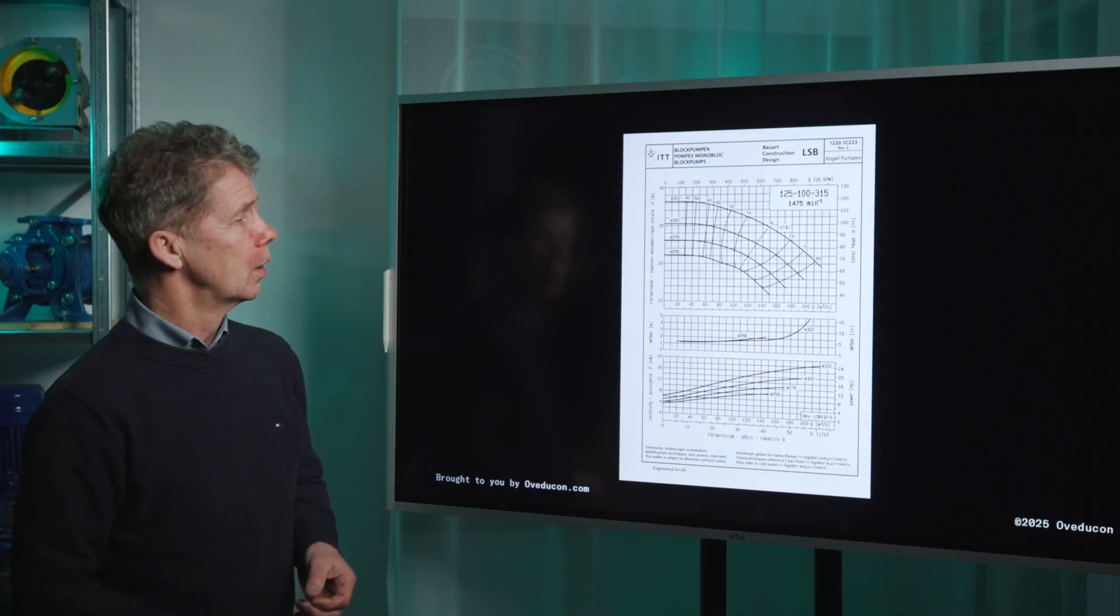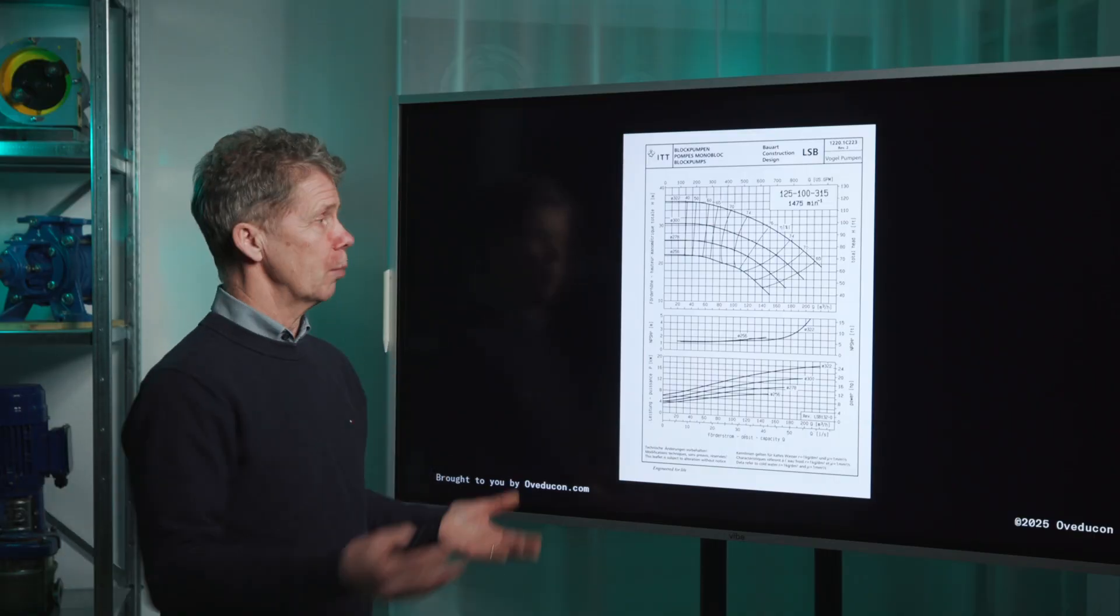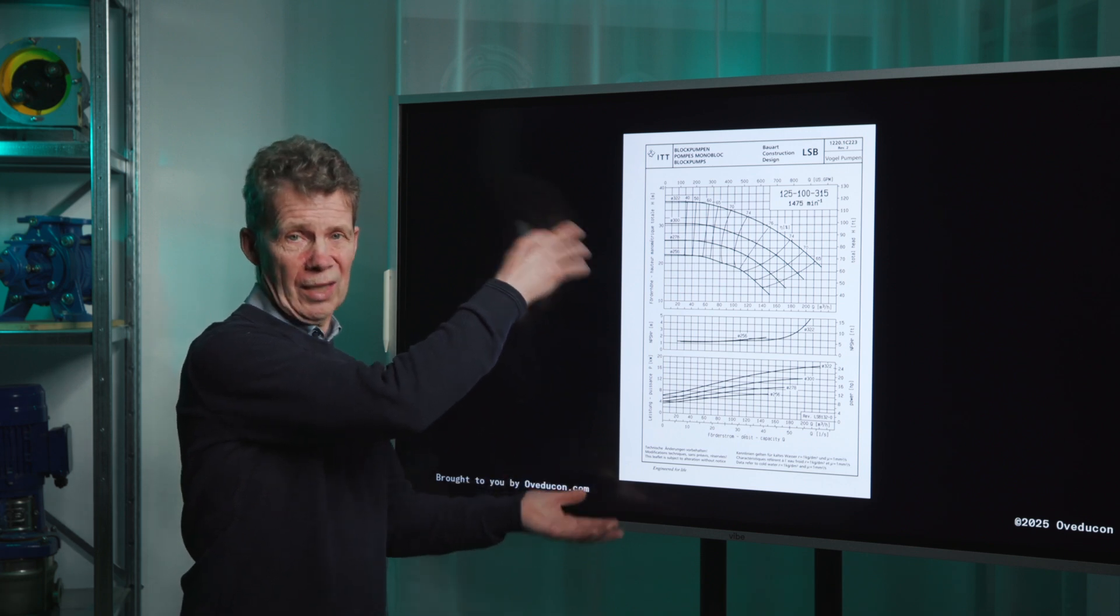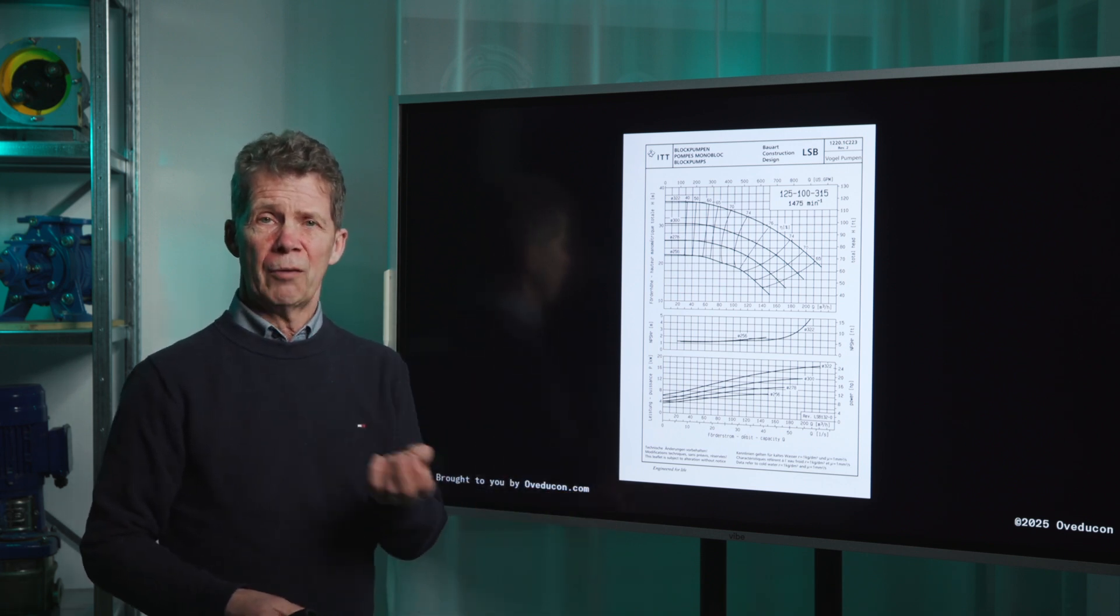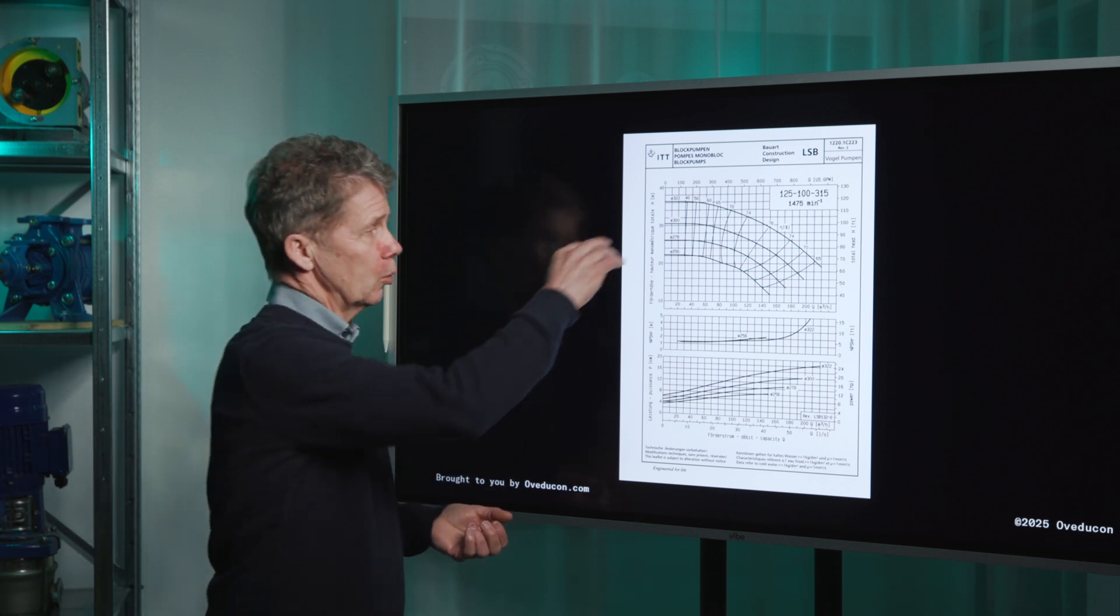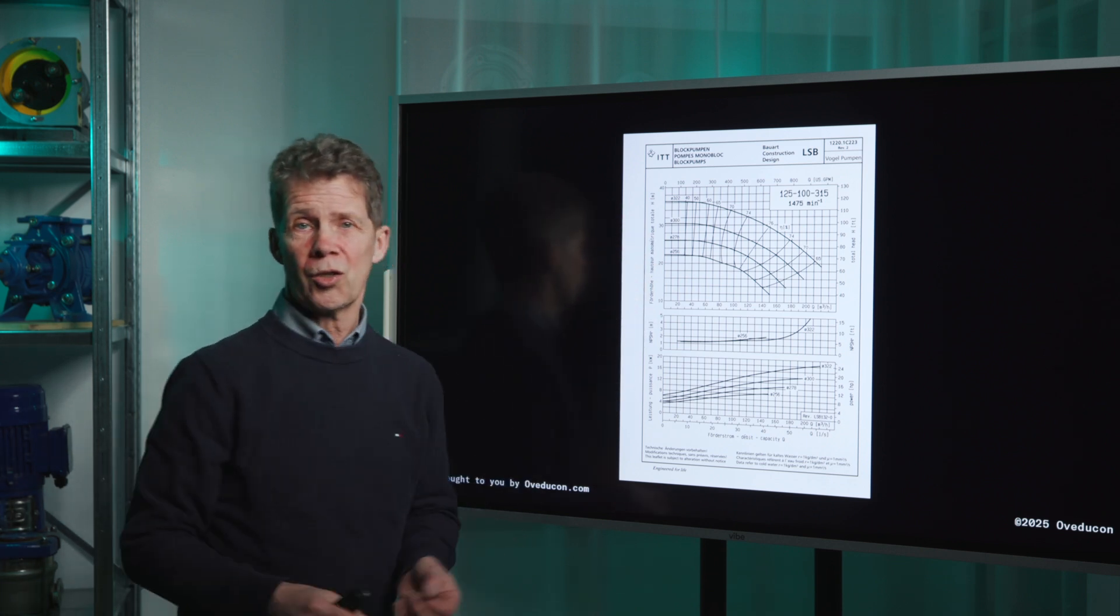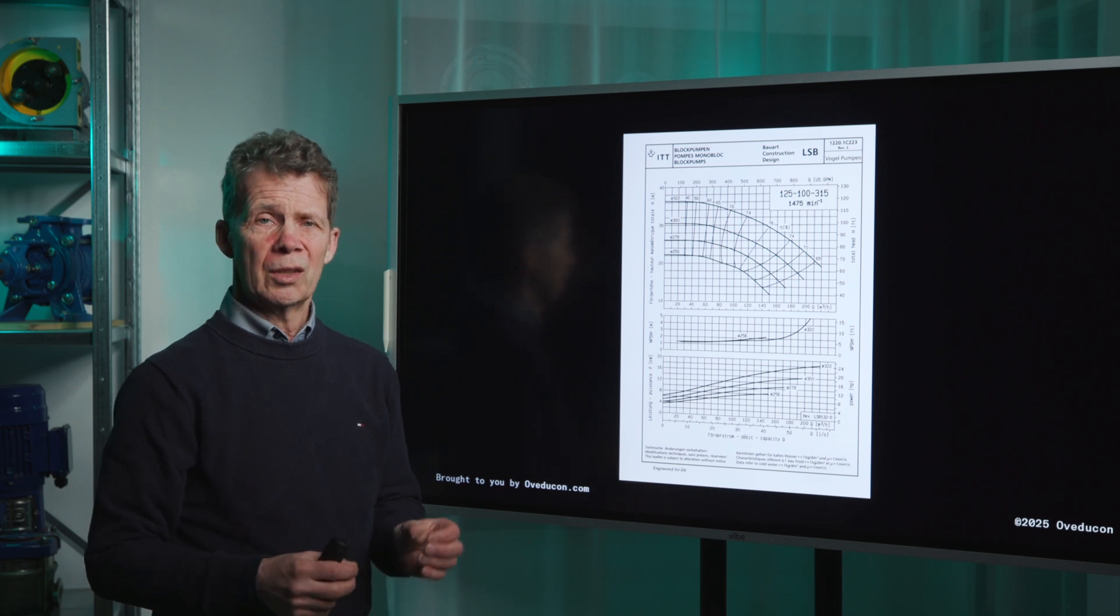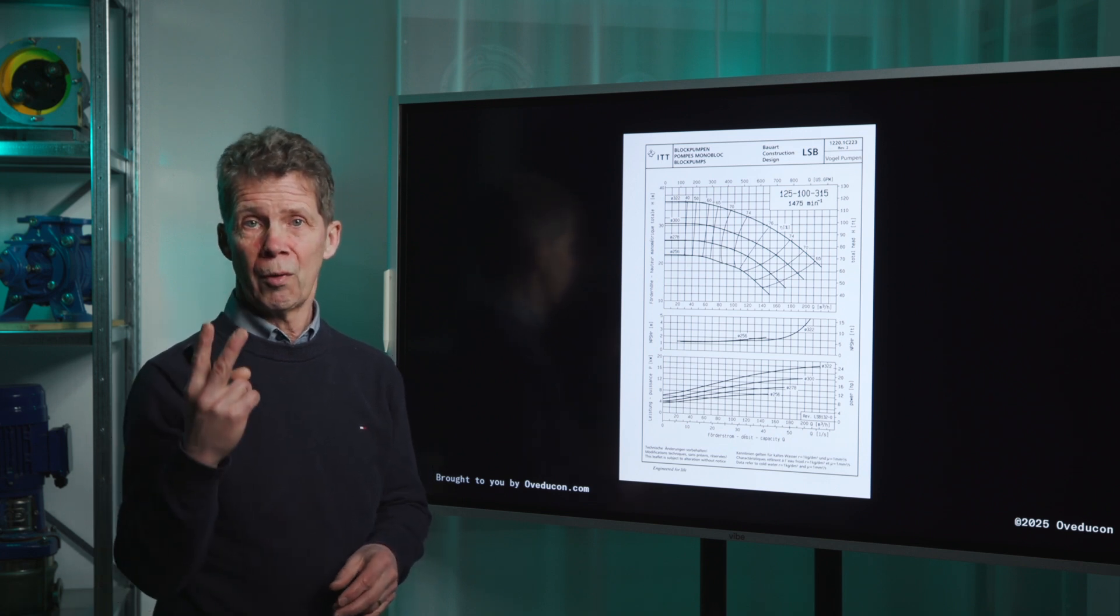How can you determine your NPSH required value? For that you go to a pump curve. And I think you know it already. A pump curve can look like this. But you have to look for your NPSH required curve. And now there are three curve blocks in this pump curve. Then you have to look for two things.